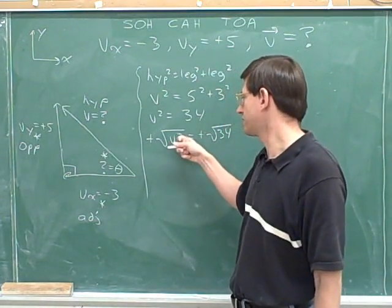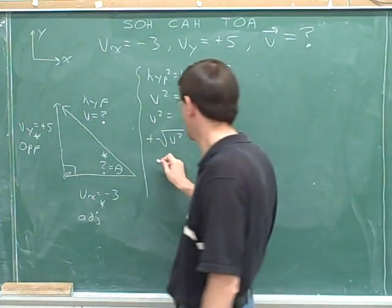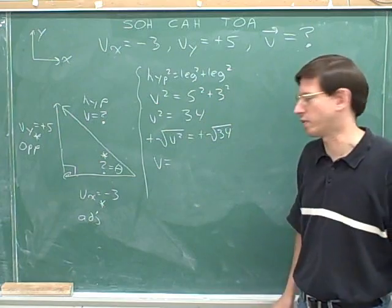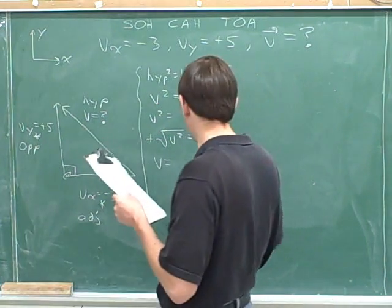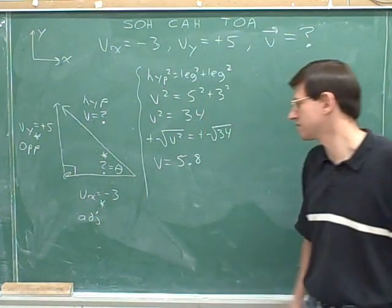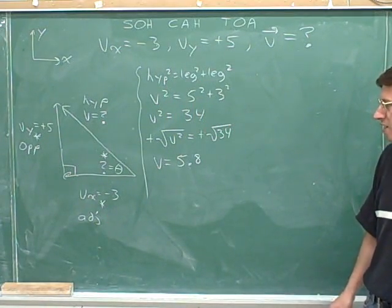Positive square root, because we want a length. If you start with V, and then you square it, and then you take its square root, you get back to V. That was the whole point of taking the square root, to remove the squaring. And our calculator says that the square root of 34 is 5.8.